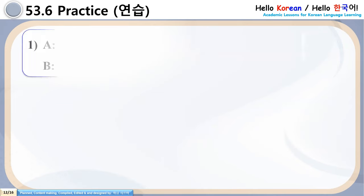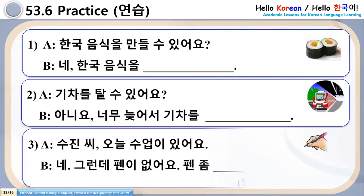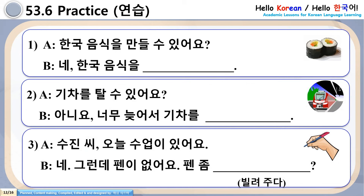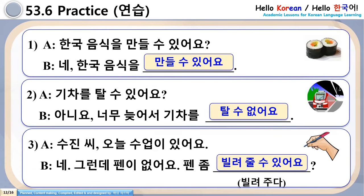Now it's time to do one practice. Three sentences are on your screen. Number 1: Hanguk Umshigal Mandalsu Issa Ayo? — Ne, Hanguk Umshigal Chhaaris Ayo. Number 2: Kicharal Thalsu Issa Ayo? — Aniyo, Nomu Nujoso Kicharal Thalsu Apsa Ayo. Number 3: Sujin Shih Onal Soobi Issa Ayo? — Ne, Krunde Pheni Apsa Ayo, Pillay O Chulsu Issa Ayo. Answers are correct!